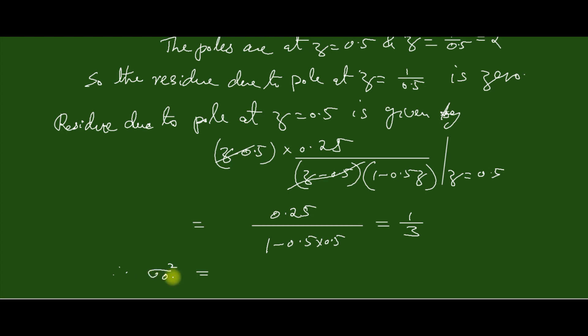Therefore the output noise power sigma_no^2 equal to sigma_e^2 into I which is equal to 2^(-2×8) divided by 12 into 1/3 which is equal to 0.423×10^-6. So the output noise power is this value.